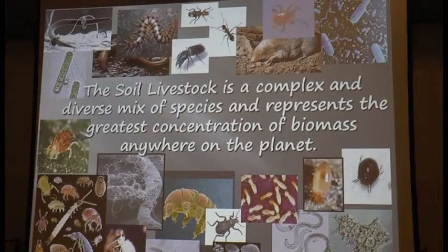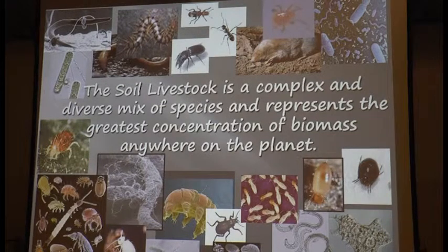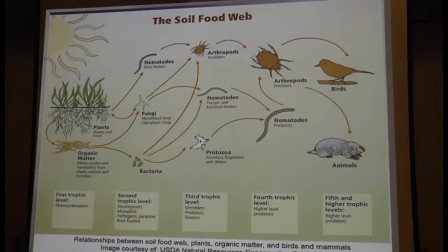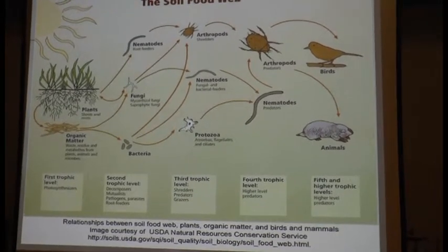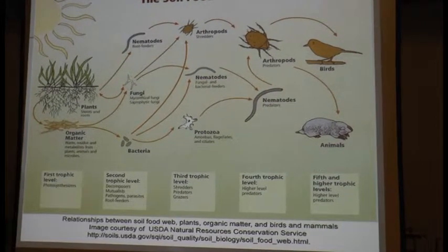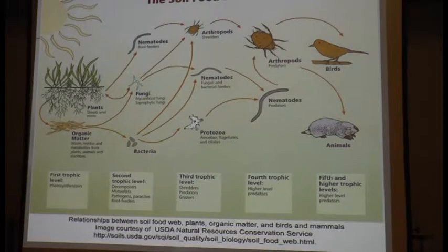I want to talk about the soil food web. This diagram was made by Elaine Ingham and published by the USDA. There's one important arrow that's missing — she said she's not sure why USDA took it out, probably because it was cluttered. That arrow is very important: it shows that the predatory nematodes eat the root-feeding nematodes. So if you have predatory nematodes in there, it's very unlikely you'll have a root-feeder nematode problem.